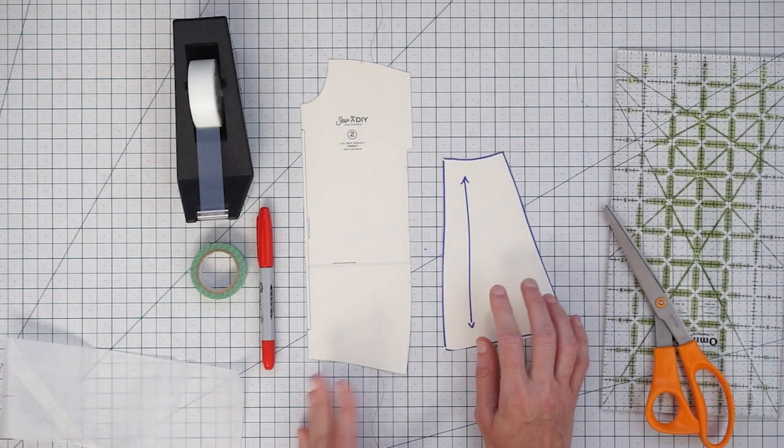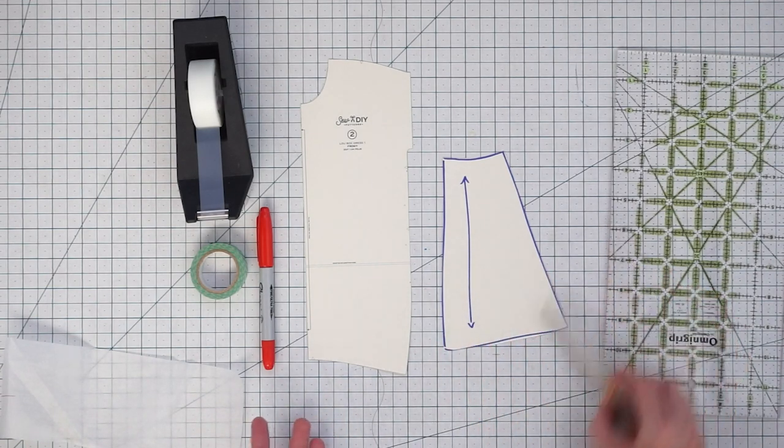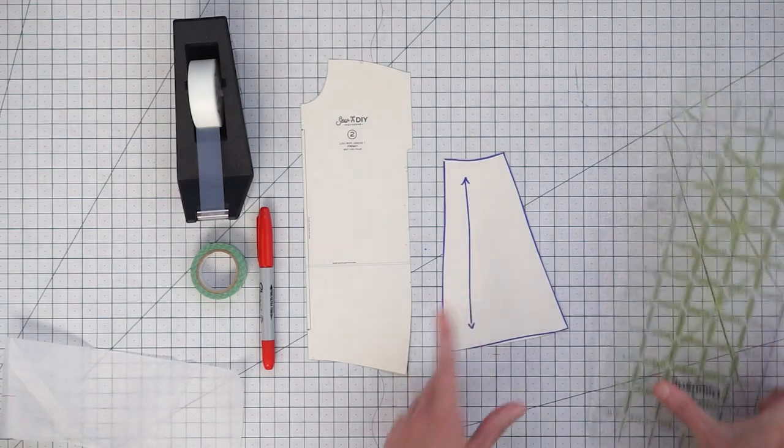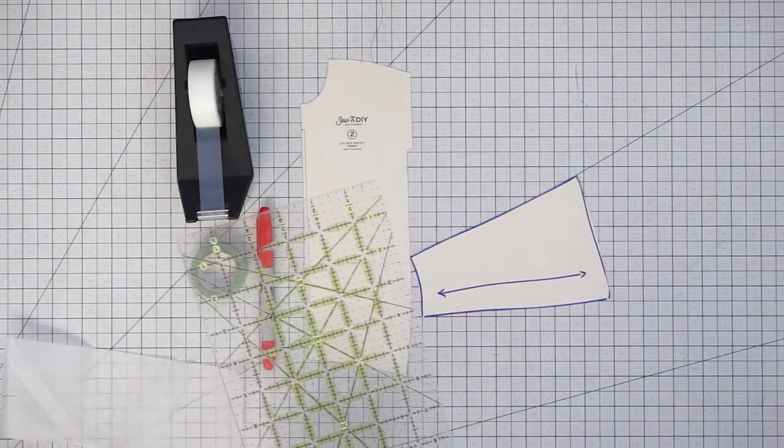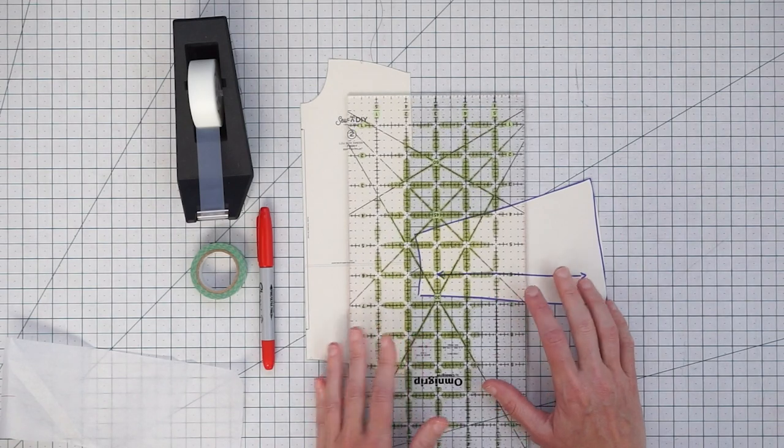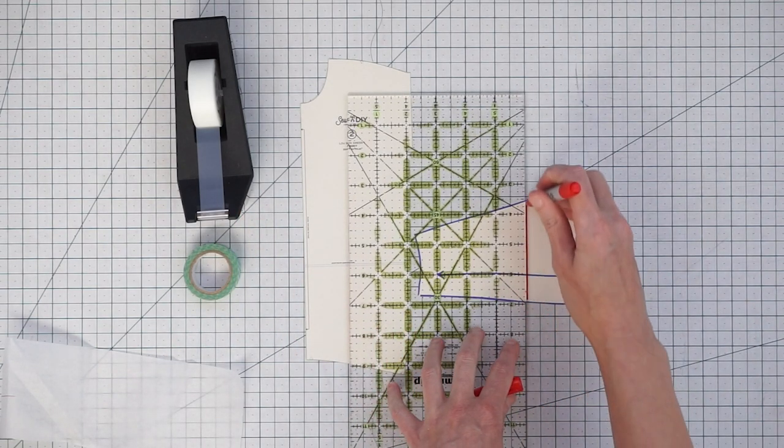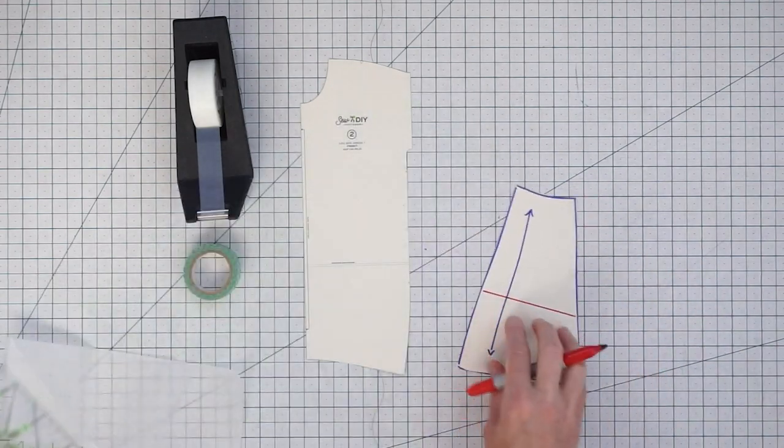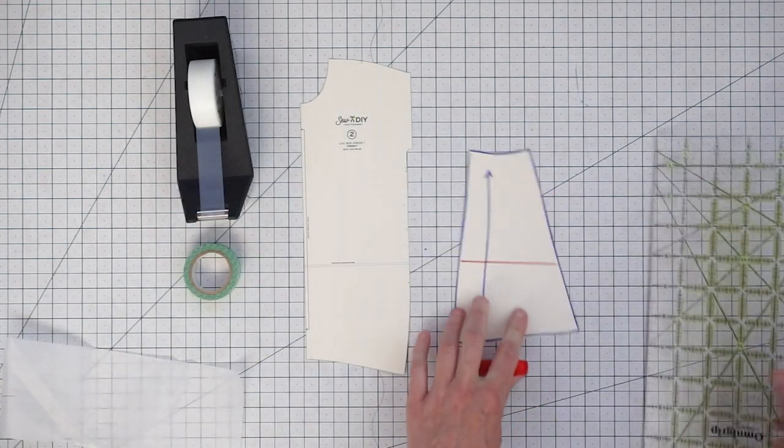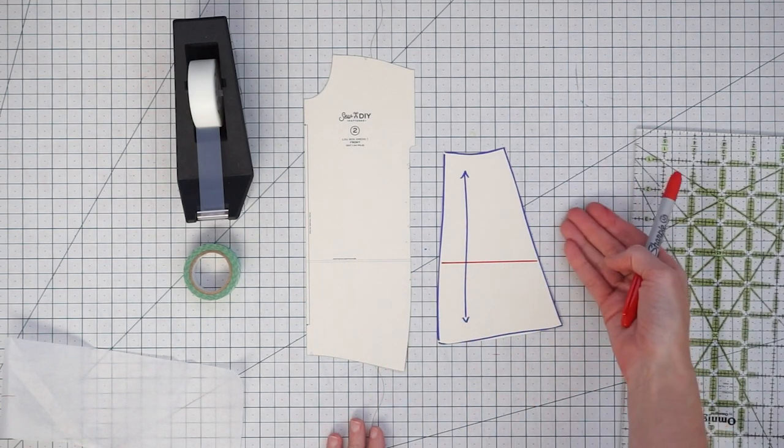In this pattern, we don't have a lengthen-shorten line. So what you would want to do is find your grain line and then using your ruler, draw in a line that is perpendicular to it. So it's 90 degrees from the grain line. We're going to use these spots as our locations to lengthen or shorten.